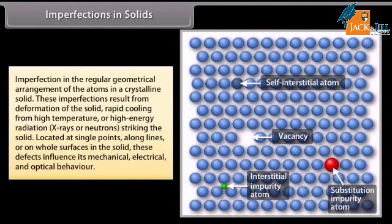Imperfections in solids. An imperfection is an irregularity in the regular geometrical arrangement of atoms in a crystalline solid. These imperfections result from deformation of the solid, rapid cooling from high temperature, or high-energy radiation such as X-rays or neutrons striking the solid. Located at single points, long lines, or on the whole surface of the solid, these defects influence its mechanical, electrical, and optical behaviour.